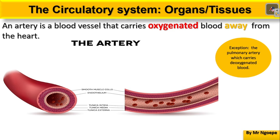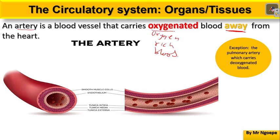Now coming to blood vessels. We have three types of blood vessels. Starting with arteries: arteries are blood vessels that carry oxygenated — meaning oxygen-rich — blood away from the heart. Usually all of your arteries carry oxygenated blood away from the heart.